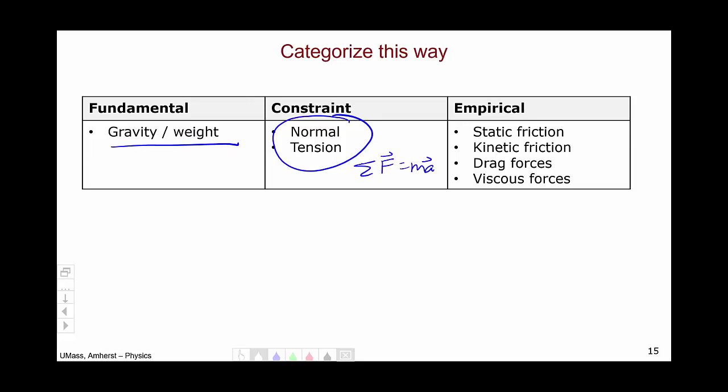Finally, we have our empirical forces. These are all of your forces that have some sort of parameter measured from data. So you have your frictional forces with your coefficients of friction. You have your drag forces, which have drag coefficients, and you also have your viscous forces with a parameter eta.